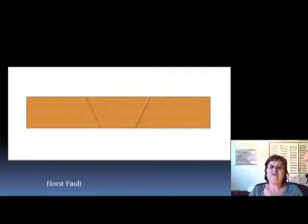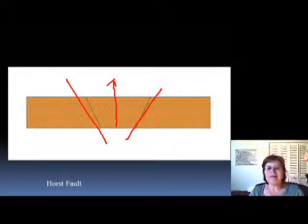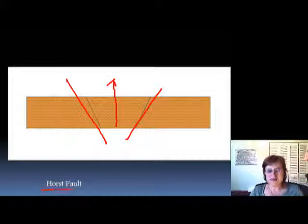When you have two reverse faults facing each other, what happens is the middle part comes up — we call that a horst fault.